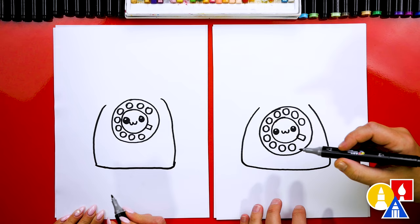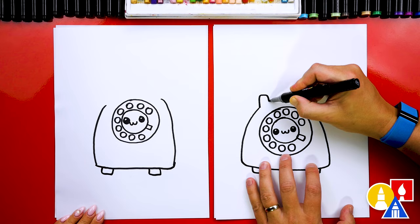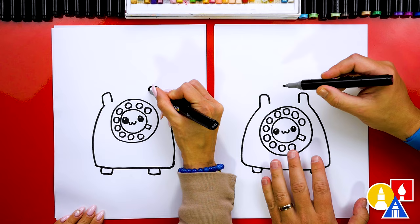There we go. And then we can also draw the little feet on the bottom of our phone. And then we're going to draw the part that the headset or handset connected to or rested on. So we're going to draw an upside down U and then we could draw another upside down U over here. Kind of looks like ears. And then we can connect those two together.